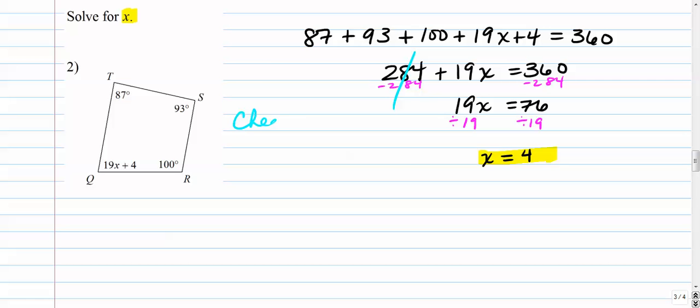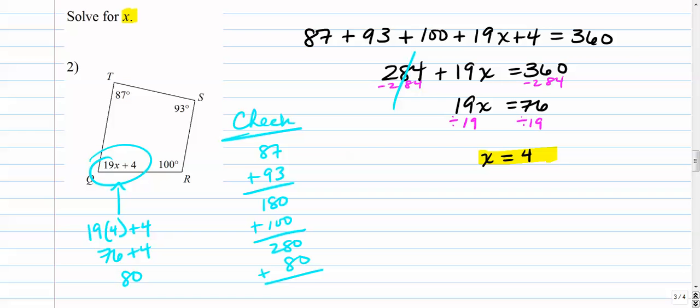Like I said earlier, it's a pretty good idea to check your work, especially for something like this, where you should probably plug that back in. So let's check 87 plus 93. That's 180 plus the 100. That's 280. And we want to substitute the x value in here. So what I'm going to do is I'm going to go 19 times x plus 4. 19 times 4, that's 76 plus the original 4 that was added already. That's 80. So if I add 80 to this, does that equal 360? Sure it does. So that's a good way to check your work.